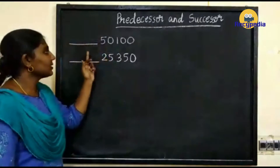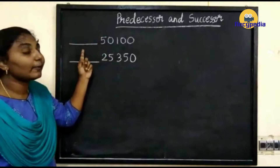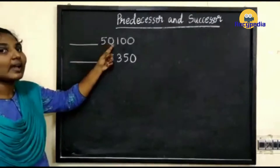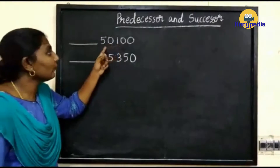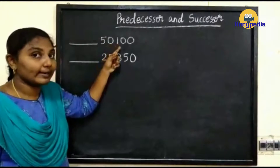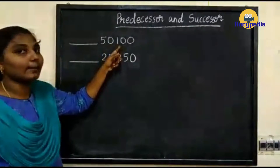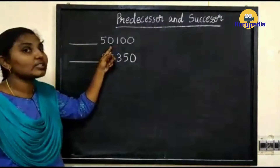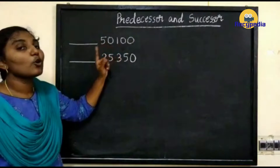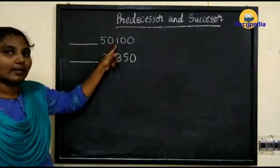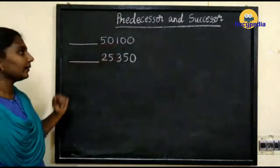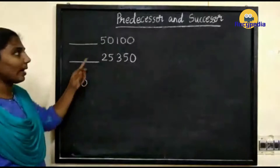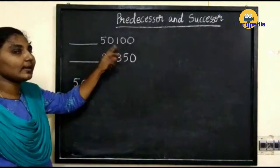First we are going to write the predecessor of the number 50,100. We are going to find out the previous number of this number. For that, we have to subtract 1 from this number, so we have to subtract 1 from 50,100.